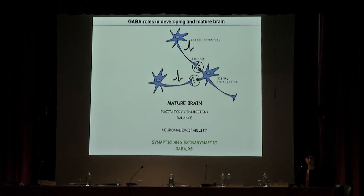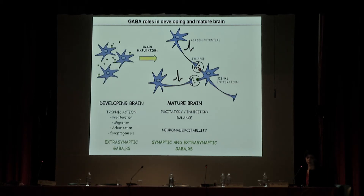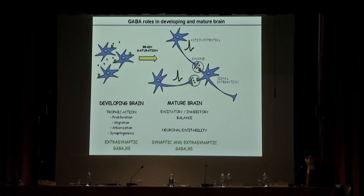In addition, GABA has another function during brain development: it is the first neurotransmitter used by the brain, and in developing neurons it regulates proliferation, migration, and maturation. For this reason, it's not surprising that alterations in GABAergic transmission may lead to epilepsy and cognitive disabilities.